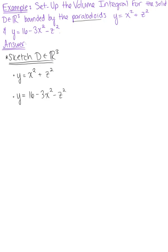Even though these surfaces are defined as y in terms of x and z, we treat them similarly to z in terms of x and y. For the first paraboloid, the coefficients on both x and z are positive, so each trace is a concave up parabola. For the second paraboloid, the coefficients on x and z are negative, meaning the traces are concave down. It's also shifted 16 units up on the y-axis.